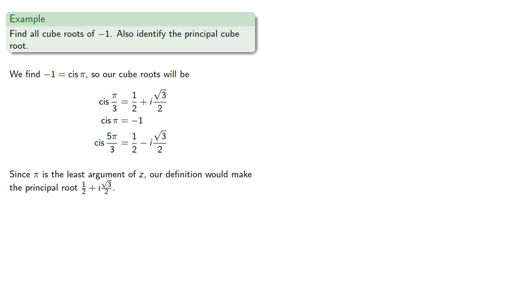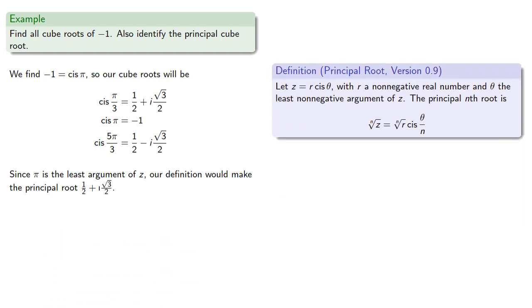Since π is the least argument of z, our definition would make the principal root this one. But we generally define the principal cube root of -1 to be -1. So which is it?